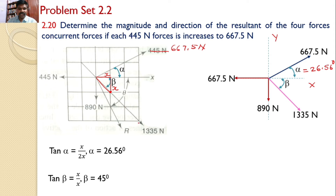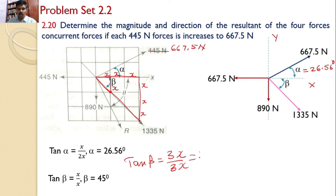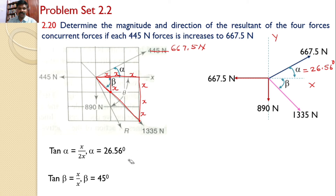Alternatively, taking another intersecting point and constructing a right angle triangle, the sides are 3X and 3X, so tan beta equals 3X divided by 3X, which equals 1, or beta equals 45 degrees. So that beta value is confirmed to be 45 degrees.